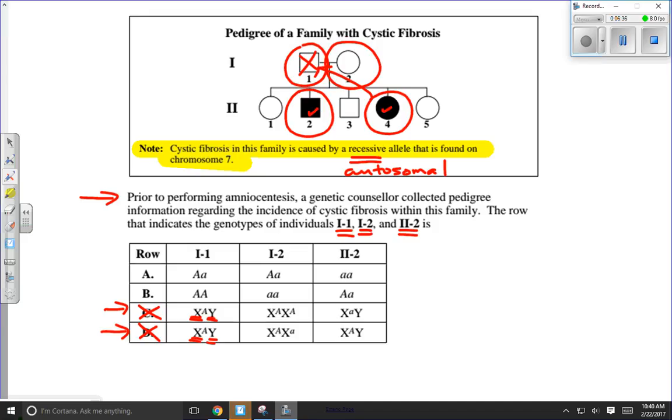Now, the answer that we're looking for, if this is an autosomal recessive trait, well, then individual 2-2, this guy right here, he's got to have two recessive alleles, two little letters in order for him to have that trait. And we see that in this answer, in answer A.